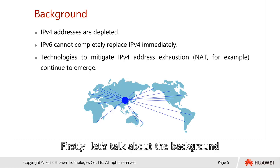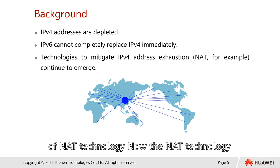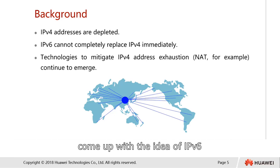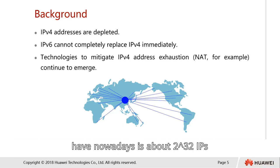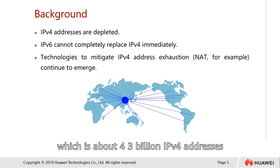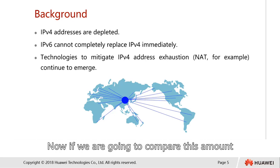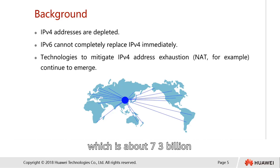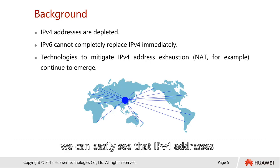Let's talk about the background of NAT technology. NAT is actually related to temporary solutions for IPv4 before we came up with IPv6. The IPv4 addresses we have nowadays total about 2 to the power of 32, which is approximately 4.3 billion IPv4 addresses. Comparing this to the total human population of about 7.3 billion, we can easily see that IPv4 addresses are not enough for everyone.